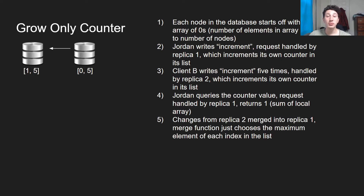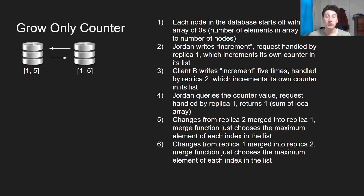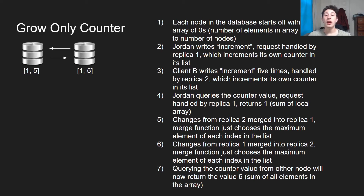Eventually, the anti-entropy process — maybe a gossip protocol — transmits the array from the second replica to the first. The first replica then takes the element-wise maximum of each index, giving us one, five instead of the one, zero we had before. When changes propagate from replica one to replica two, we call that merge function on replica two, and now they're both consistent with one, five as their counter. Each replica is now aware that replica one processed one increment and replica two processed five. Querying either of them sums up this array and returns six — they have converged.